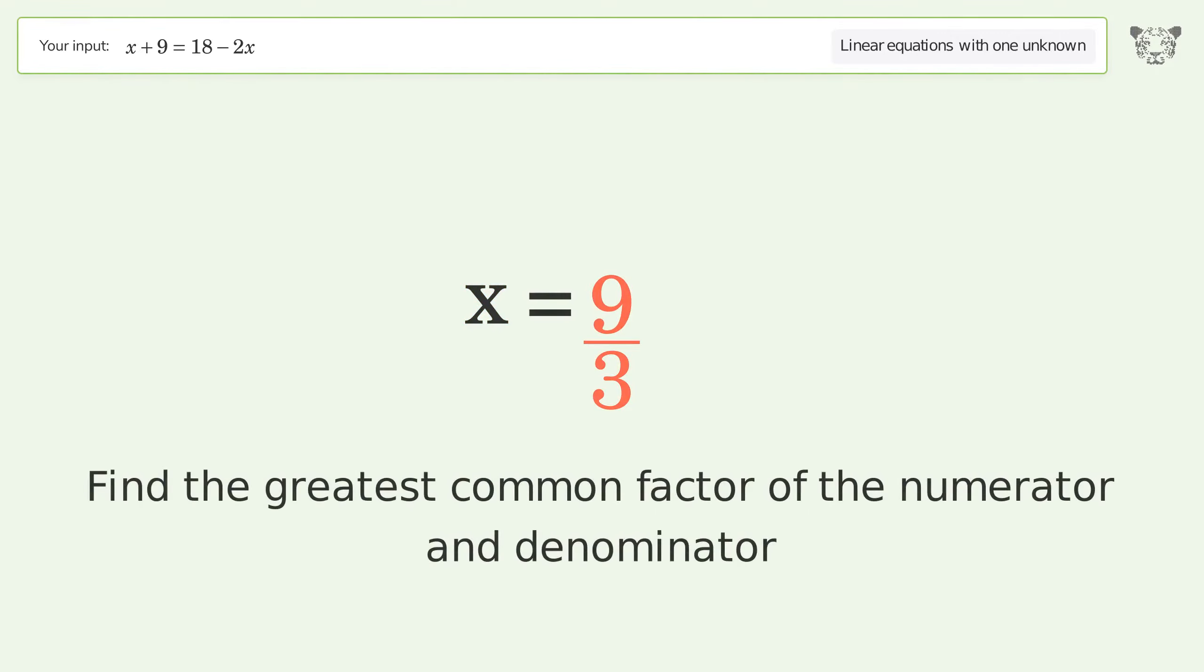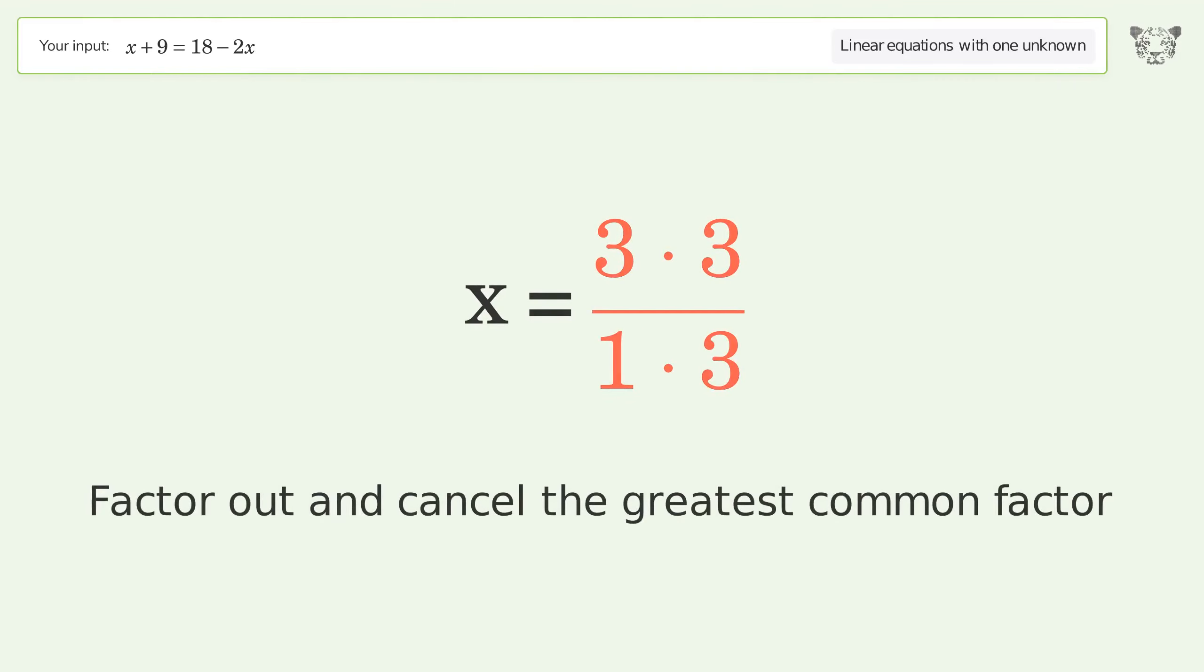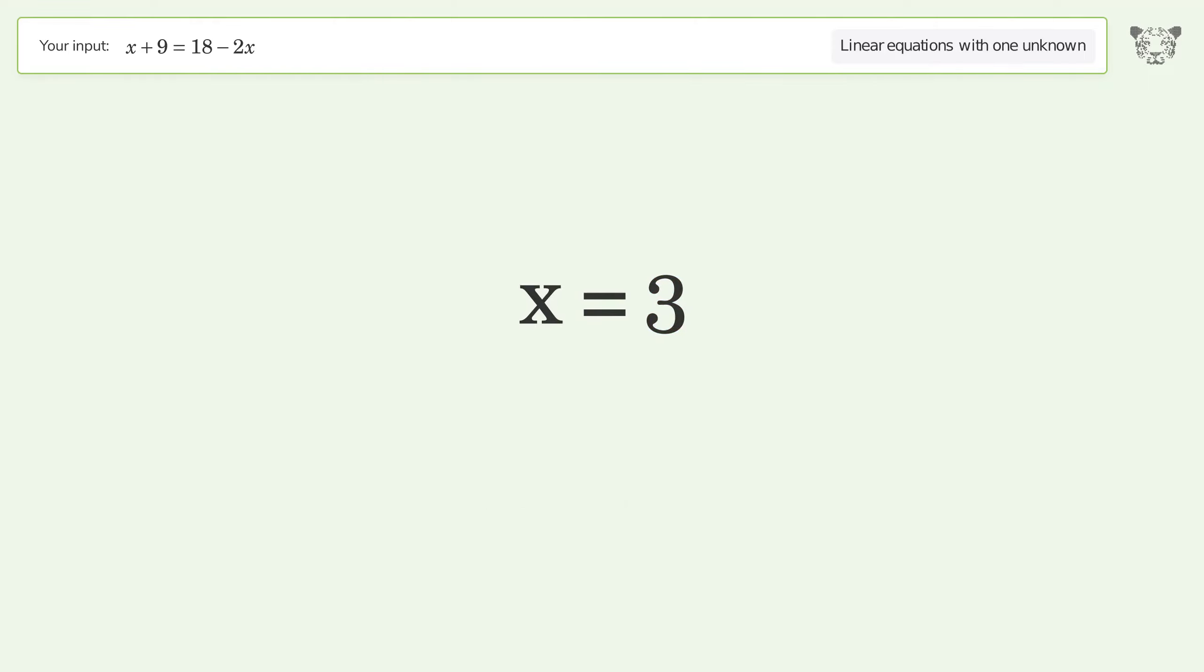Find the greatest common factor of the numerator and denominator. Factor out and cancel the greatest common factor. And so the final result is x equals 3.